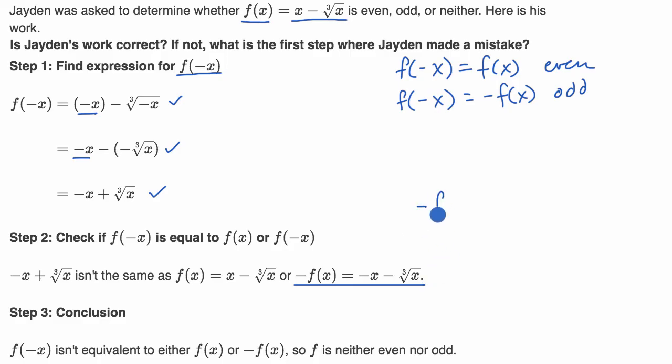See, negative of f(x) is going to be a negative times this entire expression. It's going to be a negative out front times (x - ∛x). And so this is going to be equal to, you distribute the negative sign, you get -x + ∛x.